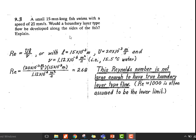Reynolds number definition: Re = UL/ν, or with ℓ = 15×10⁻³ m, U = 20×10⁻³ m/s, and ν = 1.12×10⁻⁶ m²/s (i.e., 15°C water). Re = (20×10⁻³ × 15×10⁻³)/(1.12×10⁻⁶) = 268. This is a very simple example with a small fish, characteristic length 15 mm, speed 20 mm per second which is quite slow.